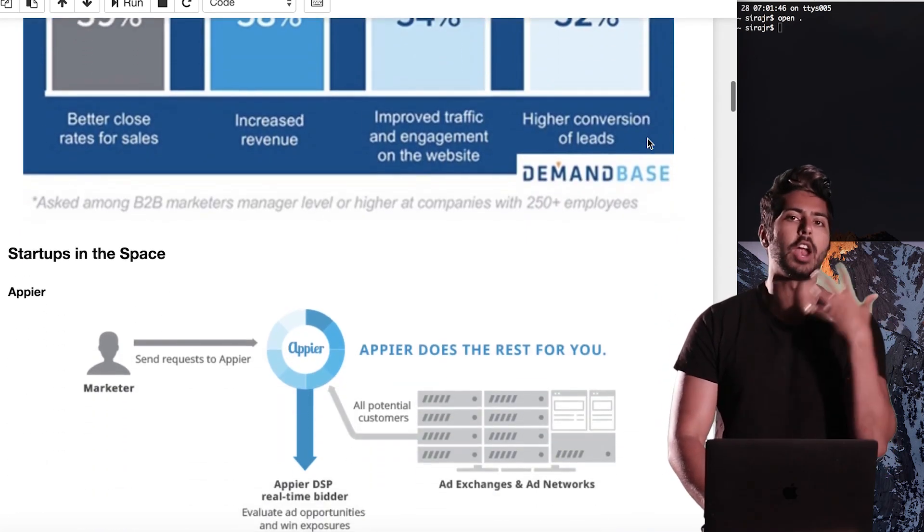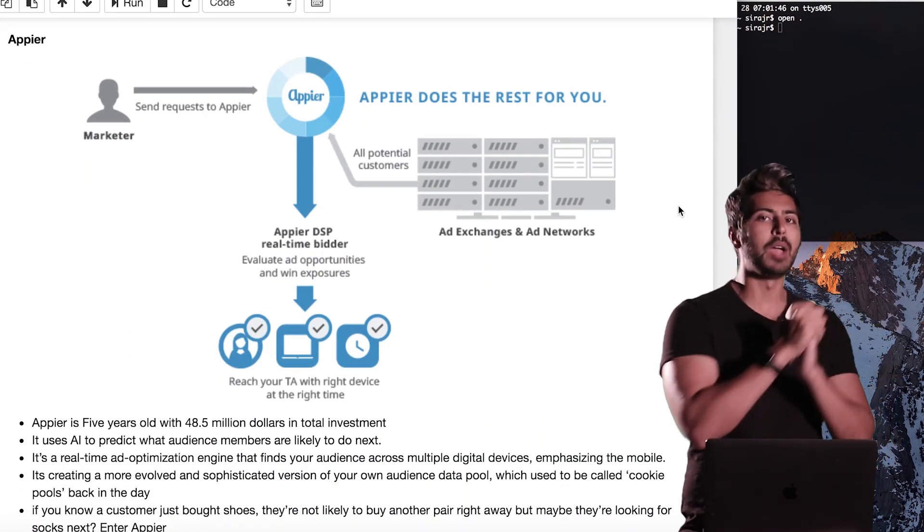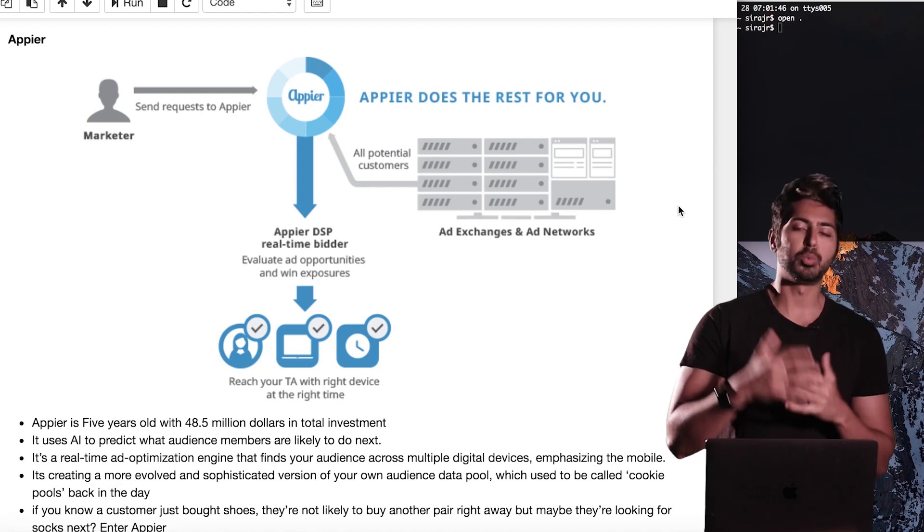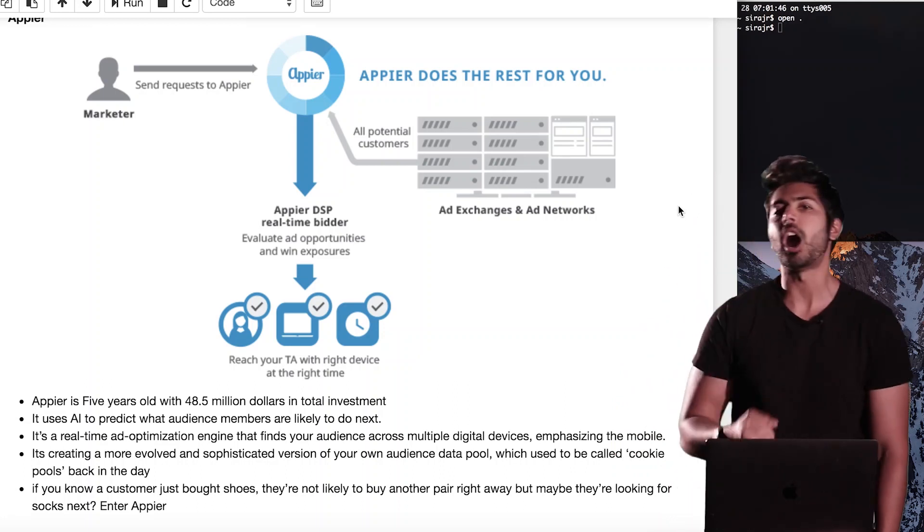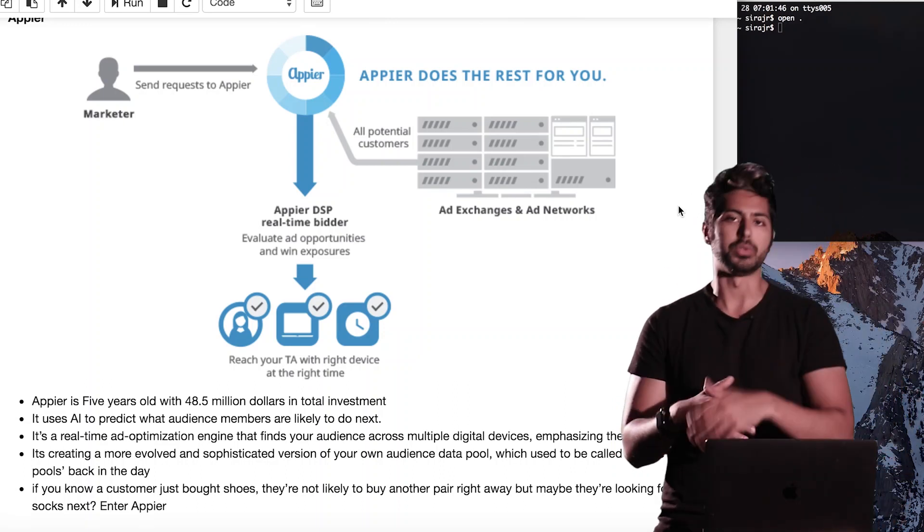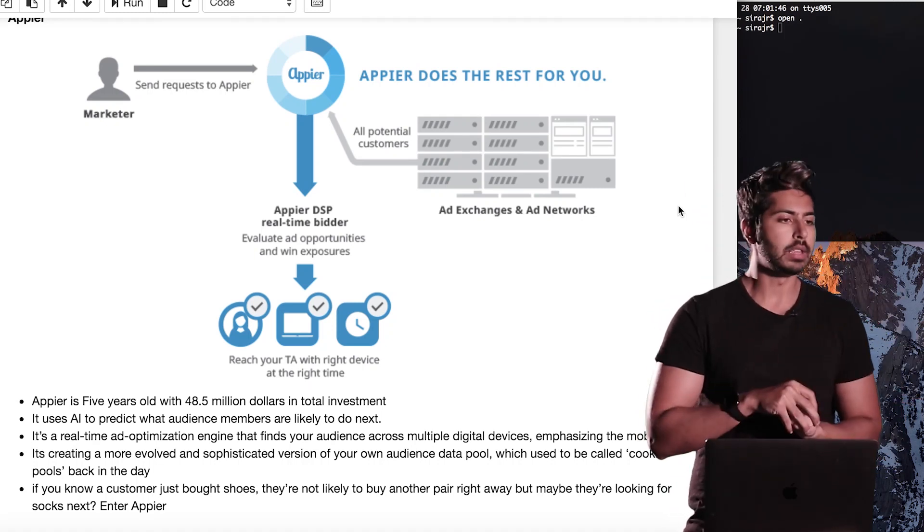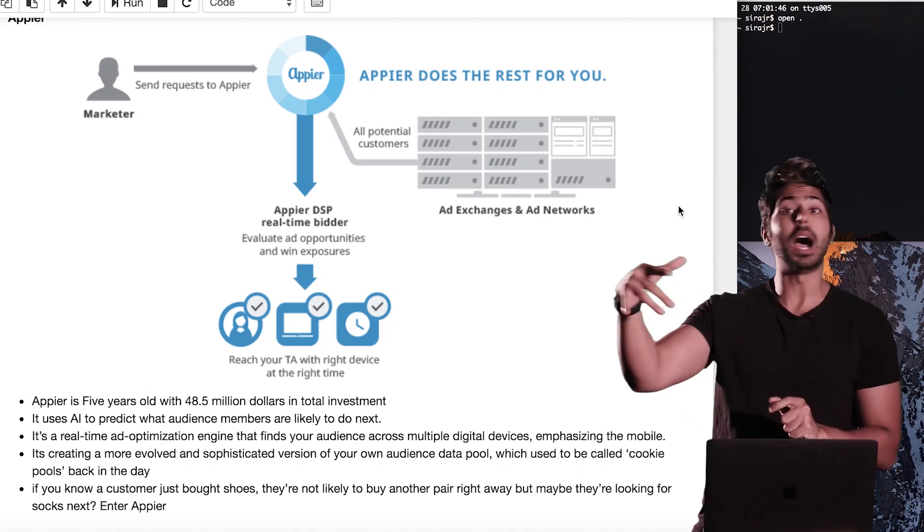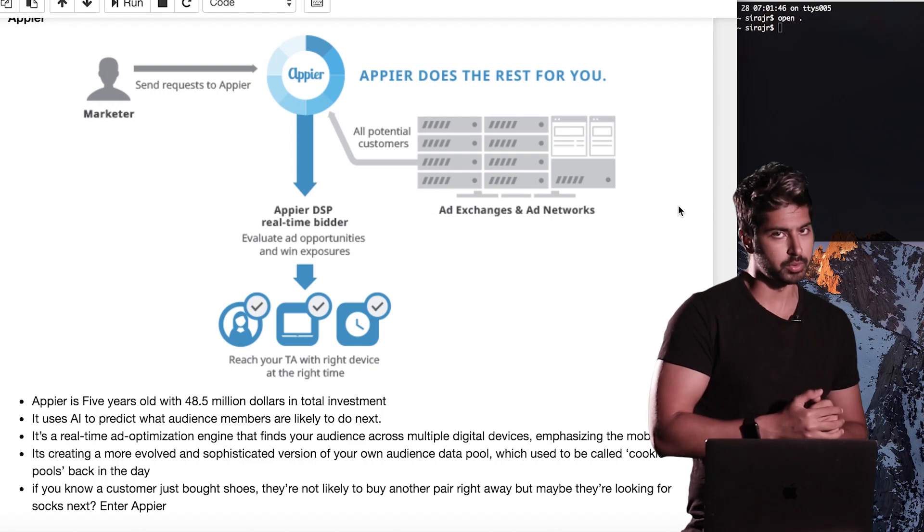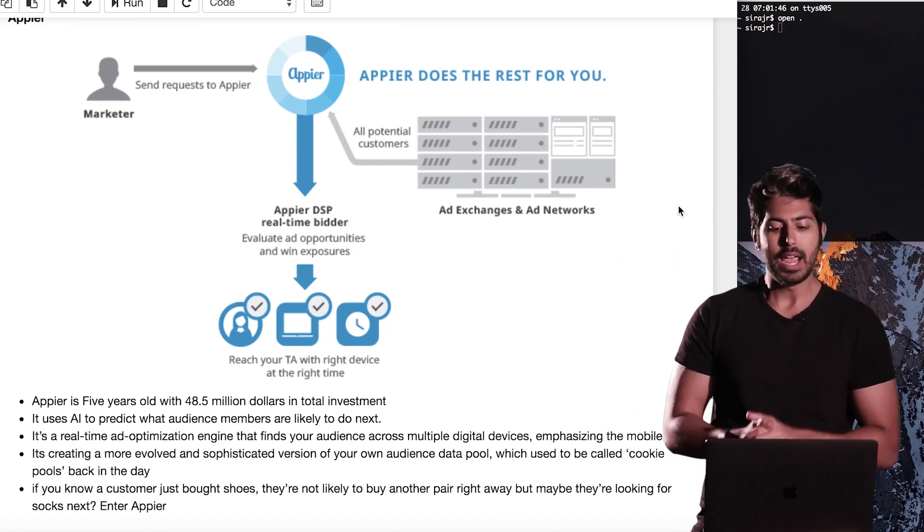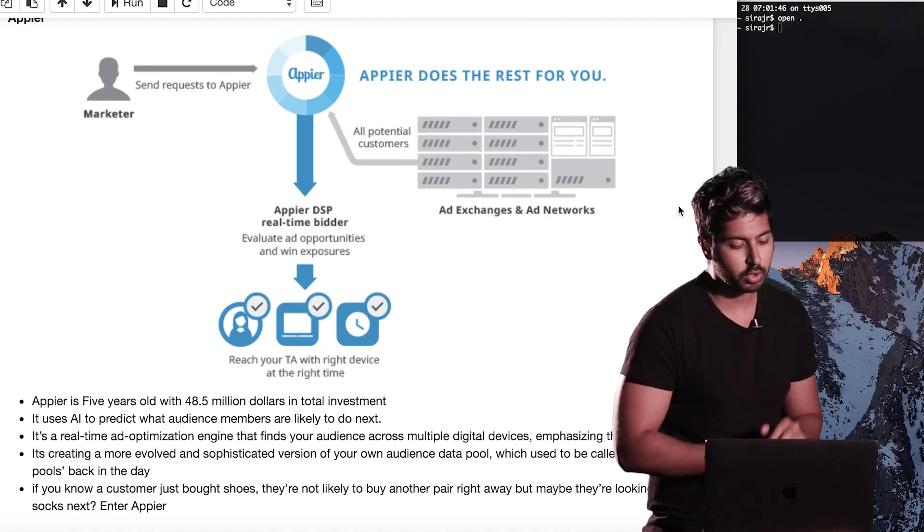So let's talk about some startups in the space that are helping to move this field forward. So Appier is one example. This is a Taiwan-based company. And what they do is they predict what audience members are likely to do next. So if you have some e-commerce website and you're selling shoes and all sorts of clothing, if a customer buys shoes, then it is likely that they'll buy a pair of socks to compliment those shoes. What they do is they provide AI as a service to companies to allow them to predict what customers are going to do next.